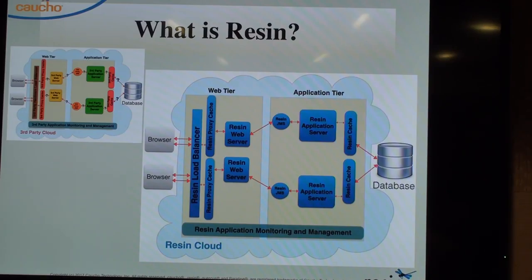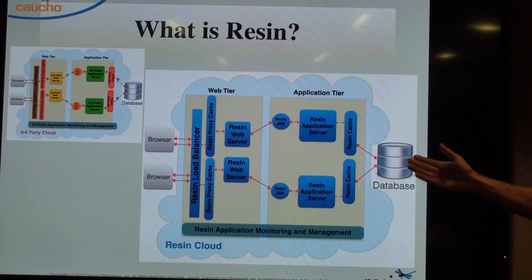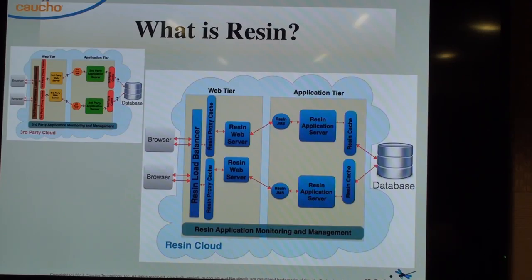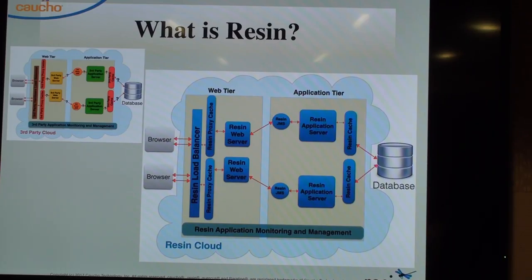Why do people choose Resin over third-party cloud components? At every integration point you're looking at integrating third-party modules — some work well together, others don't. But with our in-house development, we maintain a very high level of code quality within our source code. Resin is a very secure and tightly optimized package where everything works well together.